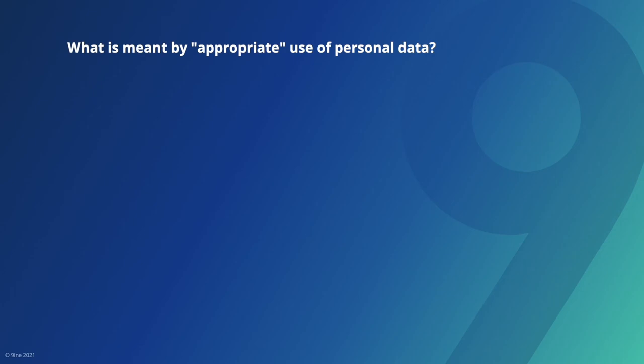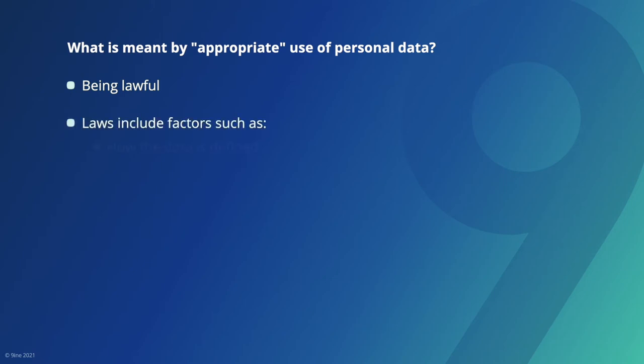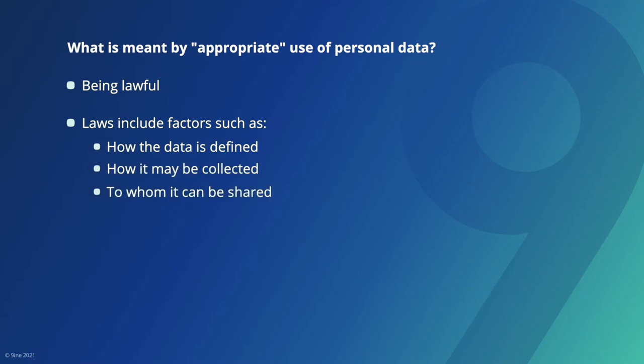Schools and other organizations have a responsibility to process personal data in an appropriate manner. There are a number of aspects involved. First, it means being lawful. There are now hundreds of laws around the world that set out specific provisions pertaining to data protection. These laws include factors such as how the data is defined, how it may be collected, to whom it can be shared, and how long it can be kept. The first priority is to ensure that all processing of personal data is lawful.